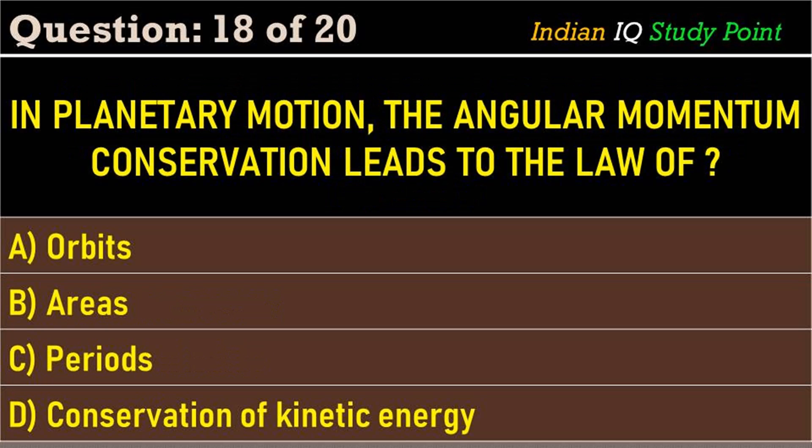Coming to the next question: in planetary motion, the angular momentum conservation leads to the law of — option A: orbit. Option B: areas. Option C: periods. Option D: conservation of kinetic energy. The correct answer is option B: areas.